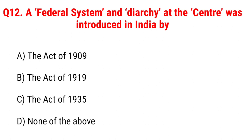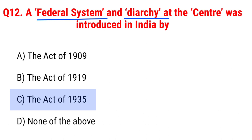Next question: a federal system and diarchy at the centre was introduced in India by Option A, the Act of 1909; B, the Act of 1919; C, the Act of 1935; D, none of the above. The right answer is Option C, the Act of 1935.